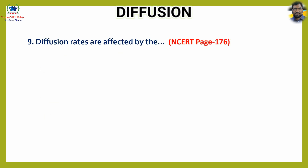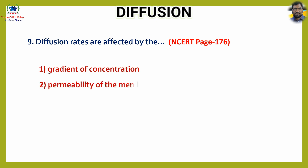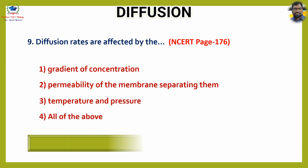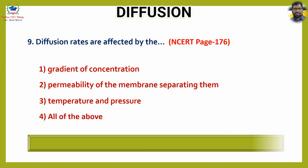Question number nine: Diffusion rates are affected by — options: one, gradient of concentration; two, permeability of the membrane separating them; three, temperature and pressure; four, all of the above. The answer is option four, all of the above.